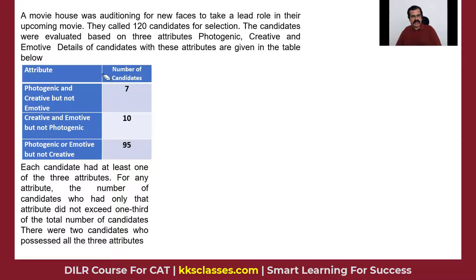Based on that, some details are given. It also says that each candidate has at least one of the attributes, which means that there is no one who is outside the set of the three parameters. So let us draw the basic diagram first and then revisit the data.